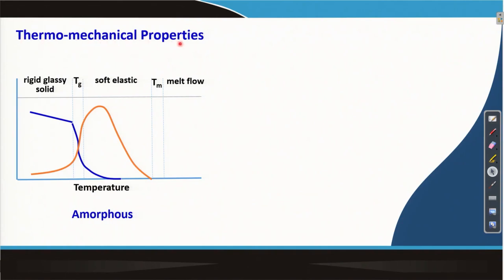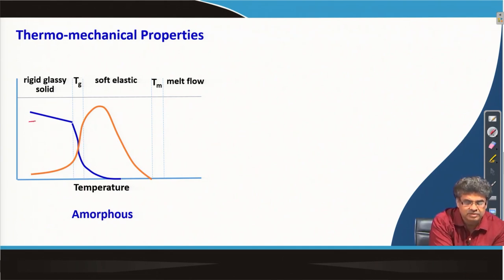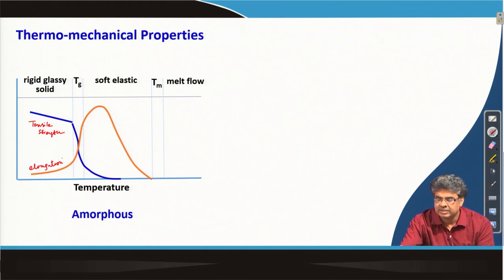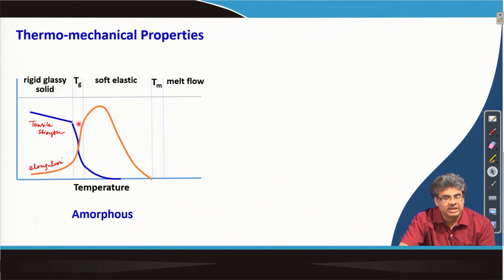When we talk about thermomechanical properties, we mean the dependence of mechanical properties on temperature. Looking at this diagram for a completely amorphous polymer, the blue line shows tensile strength and this is elongation. With temperature, the tensile strength slowly comes down before it reaches the transition region, where the temperature is around the glass transition temperature.